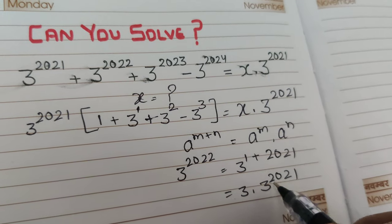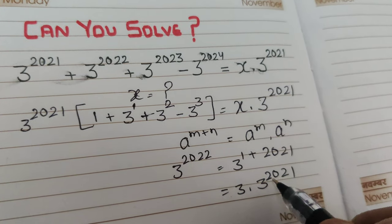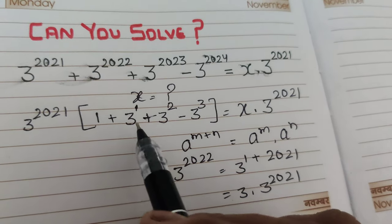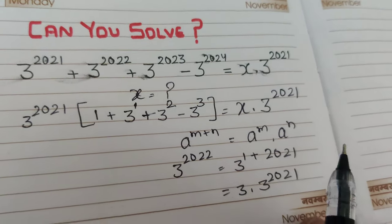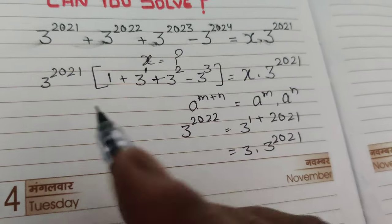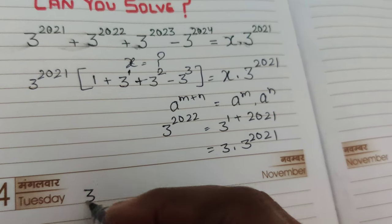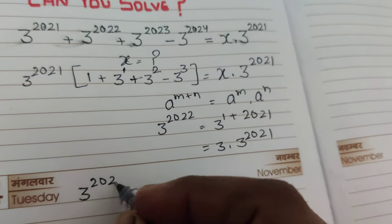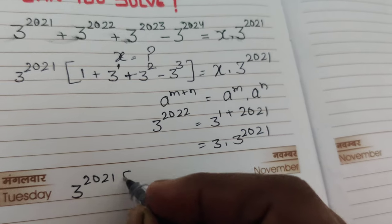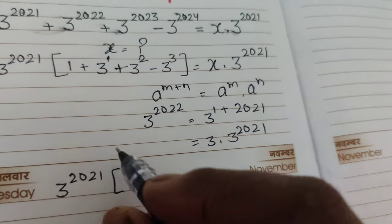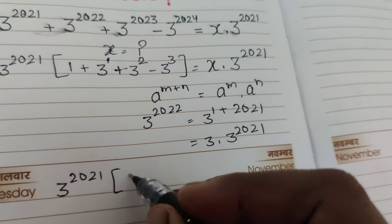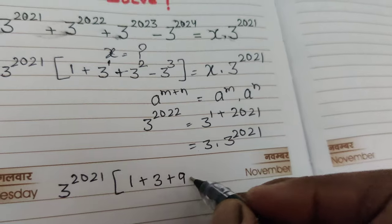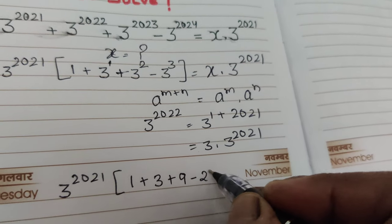So we take out the common factor 3 raised to power 2021, and we get only 3 for that term. Now solving, we have 3 raised to power 2021 times the quantity 1 plus 3 plus 9 minus 27, equal to x into 3 raised to power 2021.